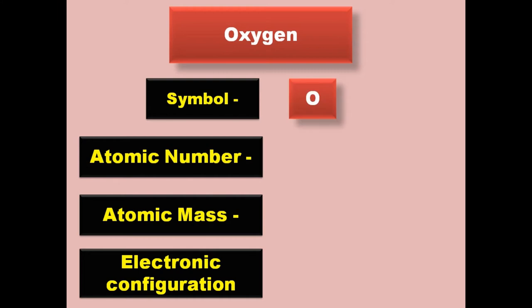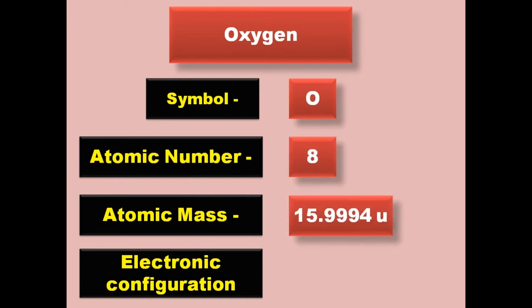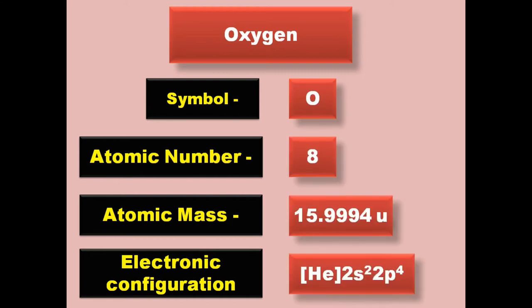Oxygen has symbol O, atomic number 8, atomic mass 15.9994, electronic configuration [He] 2s2. Oxygen exists in gaseous form at room temperature.